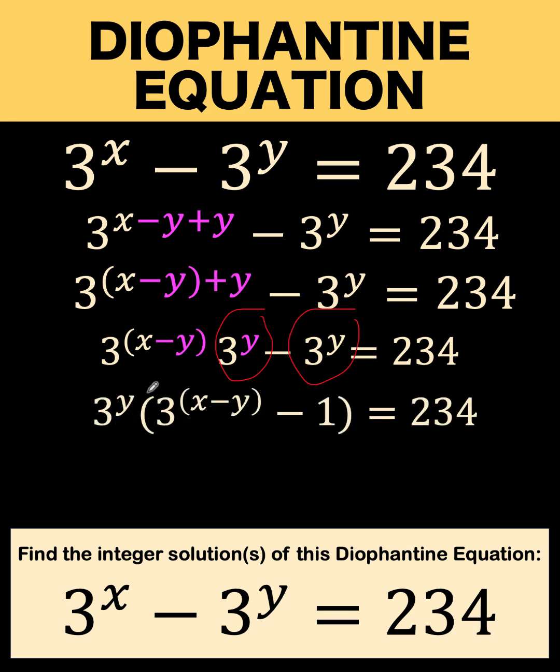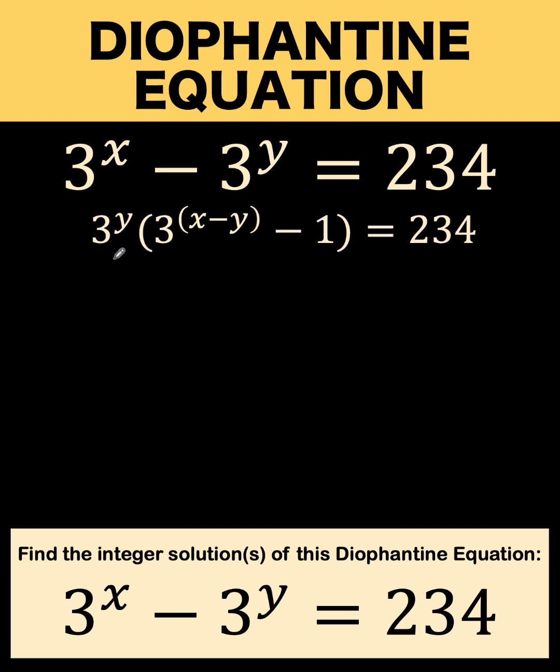Factoring out 3 raised to y, then the first term divided by that common factor resulted to this expression. Then the second term divided by itself resulted to 1 and we copy the minus sign. So we now have here a product of two quantities equals 234.